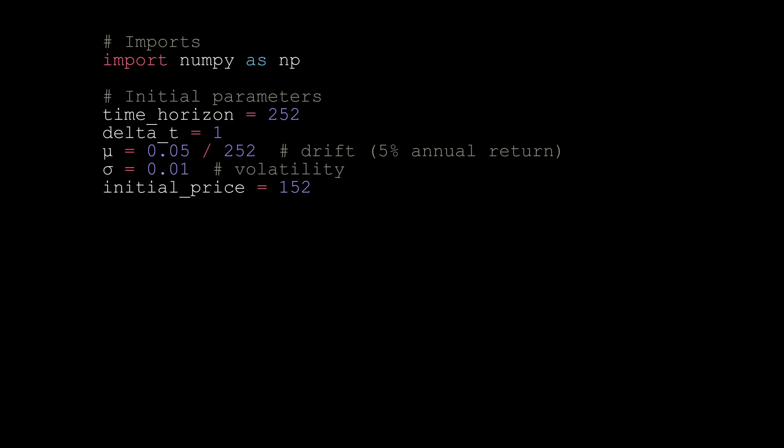For the mu and sigma values, we'll set these values corresponding to a 5% annual drift and a volatility value of 0.01. Finally, we'll set the initial price to $152.